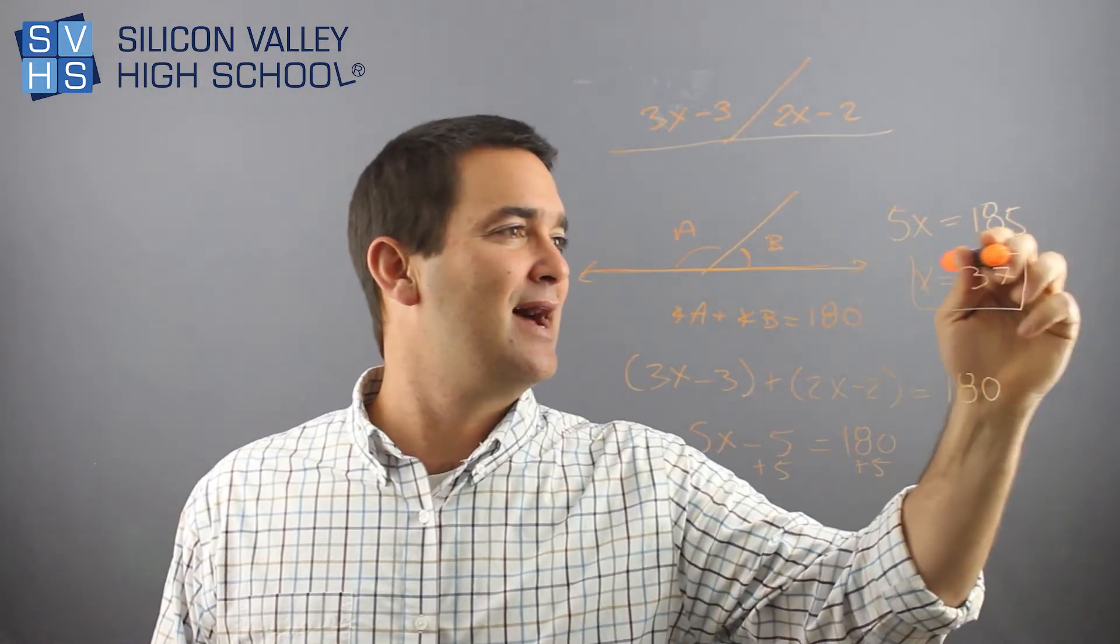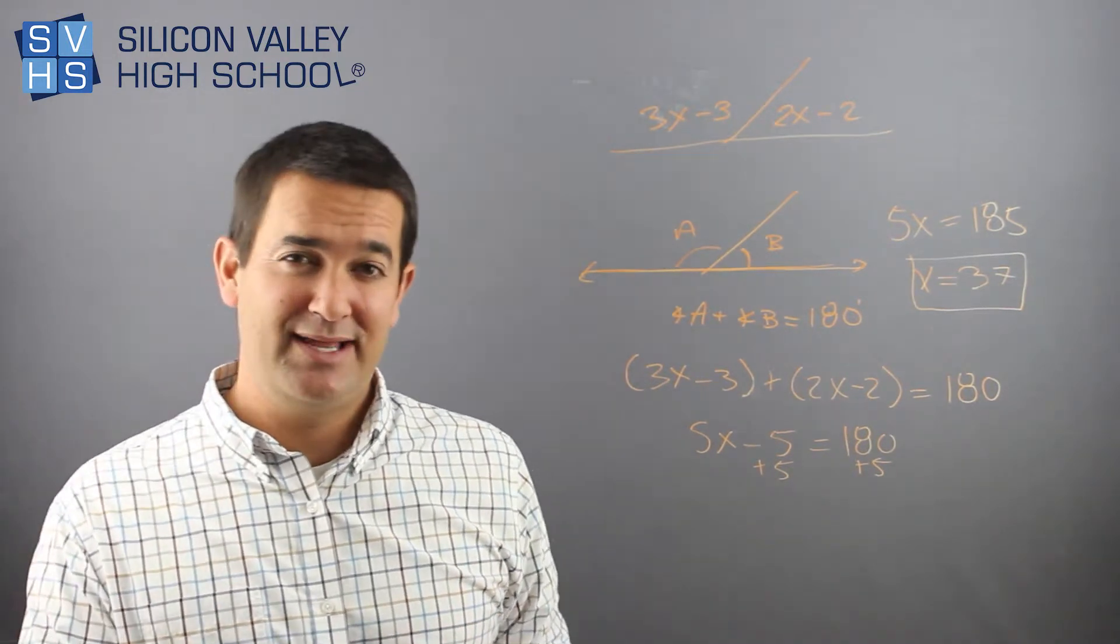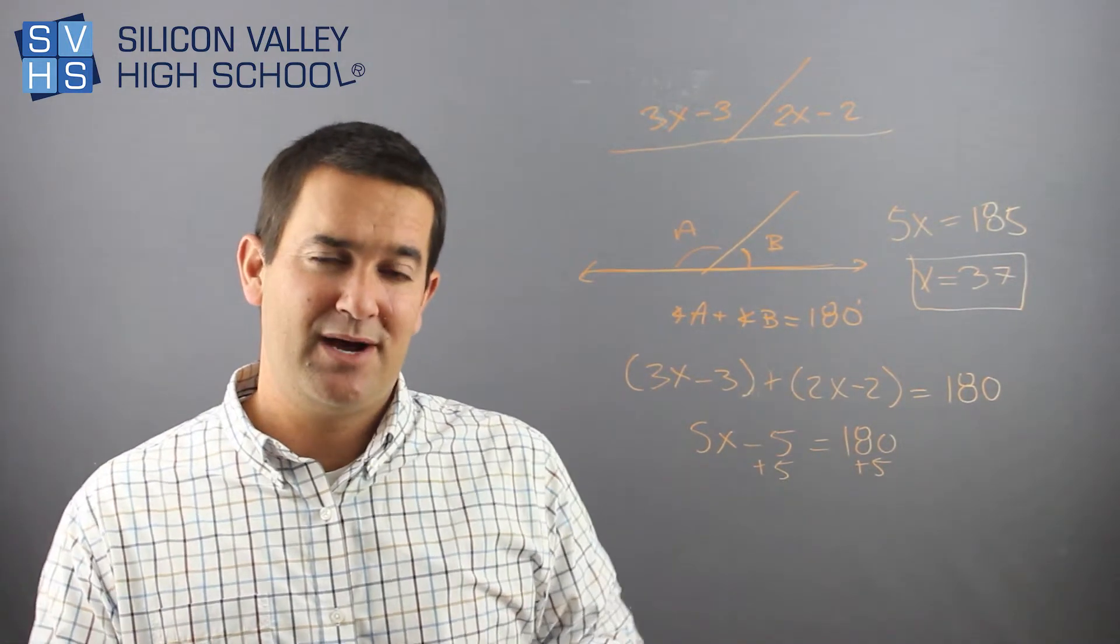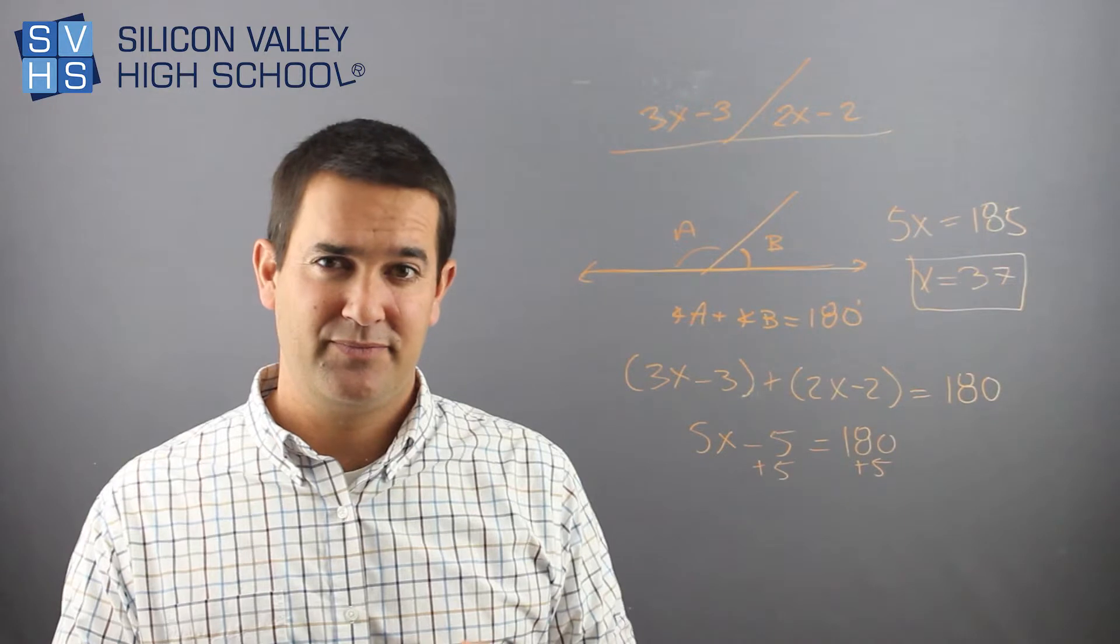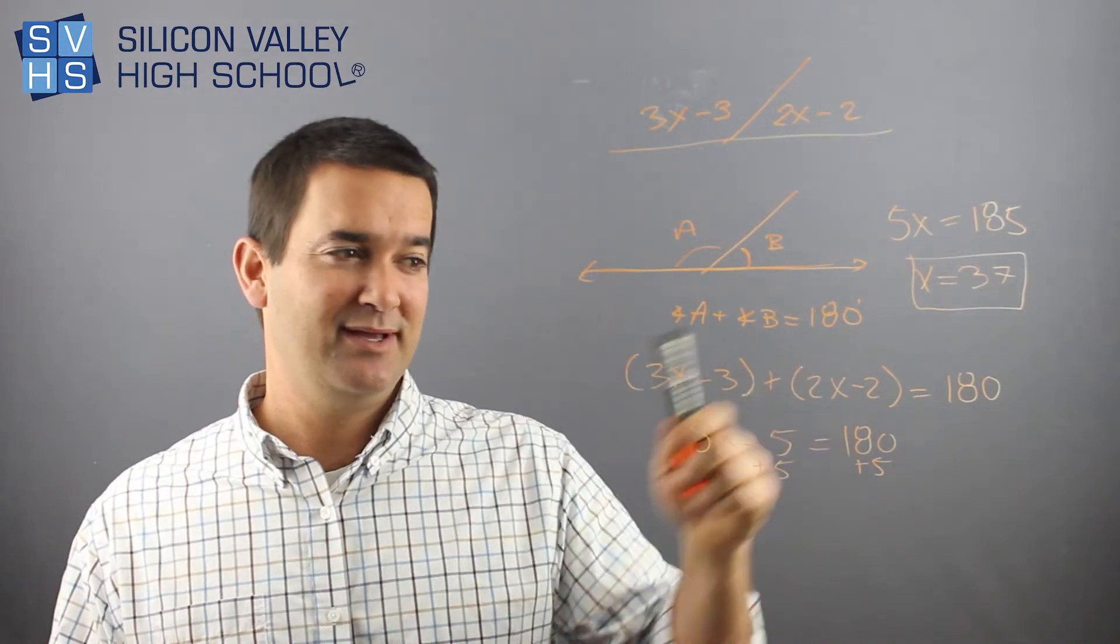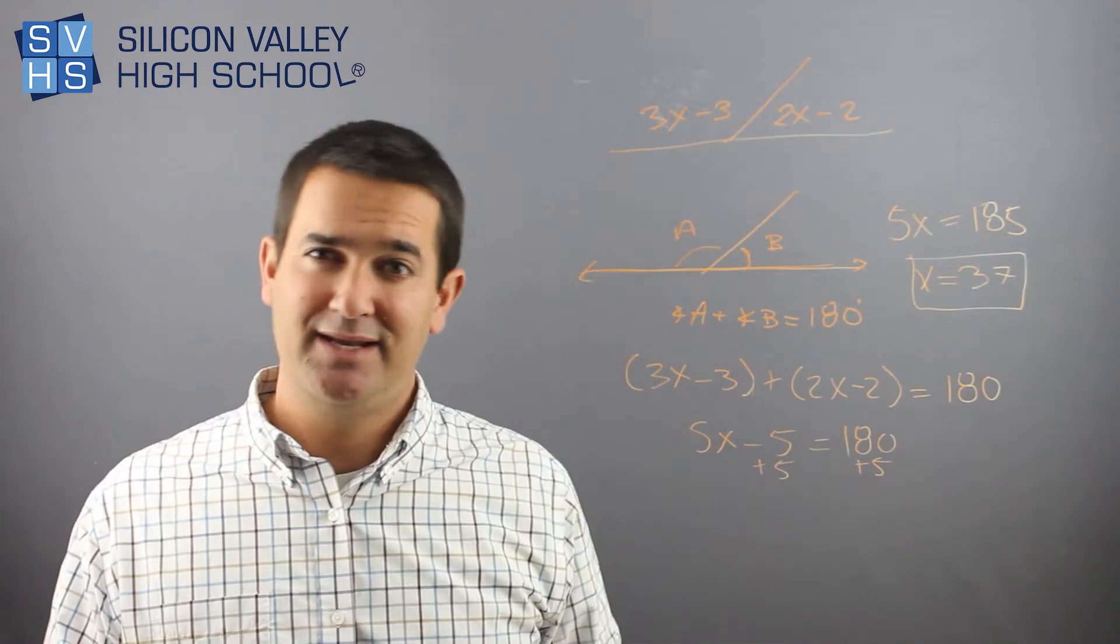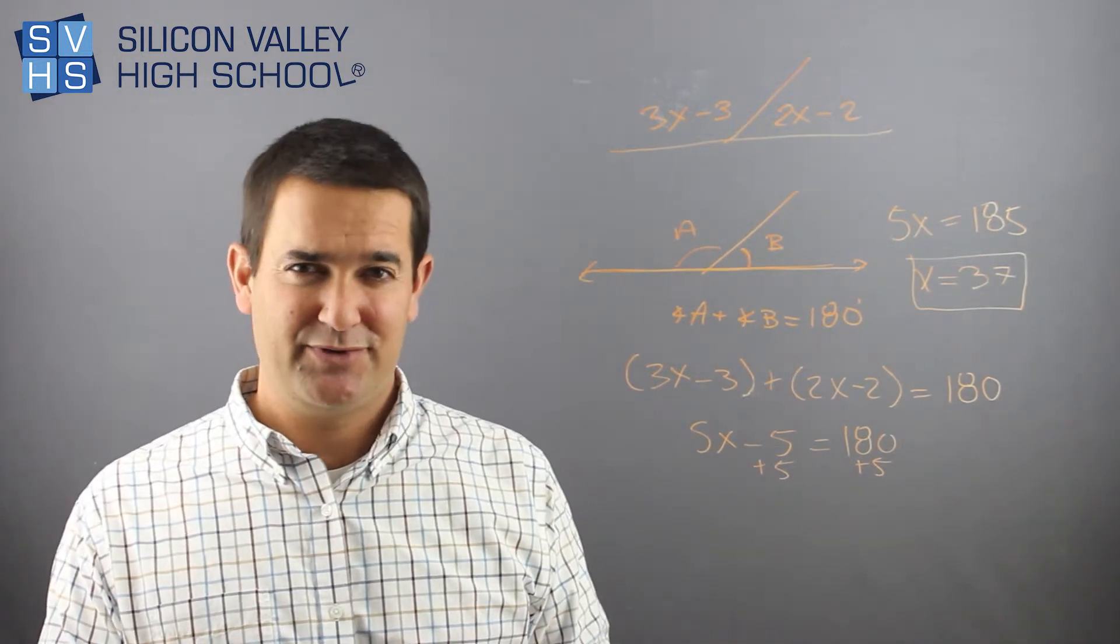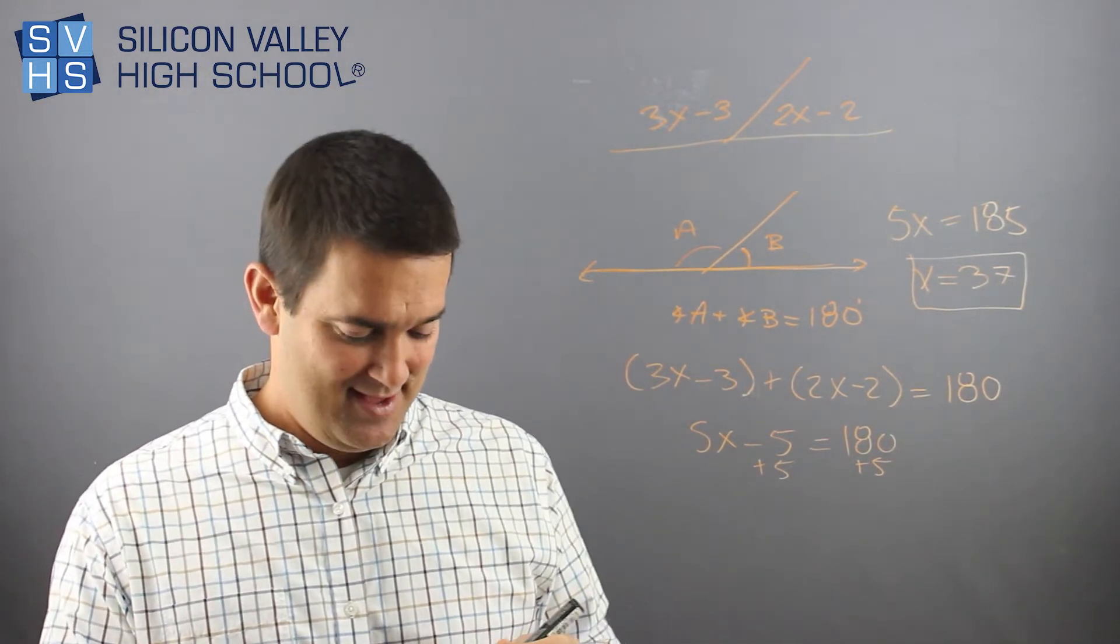But the main point is how you do this. Again, whenever you have a linear pair, the two angles come together to form a line. More importantly, the sum of those two angles, A and B, is 180, and then do whatever math you need to do. But the basic principle is that they add to 180. And that's it.